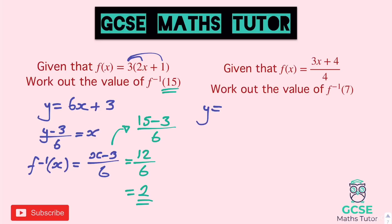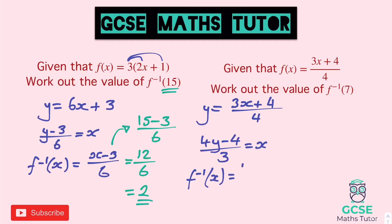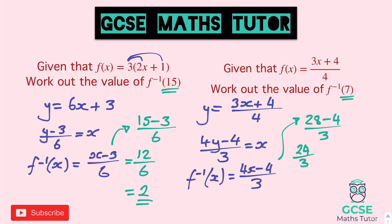For the next one, y equals 3x plus 4 over 4. Rearrange: times by 4, so 4y equals 3x plus 4. Take away 4, then divide by 3, and that equals x. So f minus 1 of x equals 4x minus 4 over 3. The number to sub in is 7, so we get 4 lots of 7, which is 28. So we get 28 minus 4 over 3. 28 take away 4 is 24, so we have 24 over 3, and 24 divided by 3 is 8. The value is 8.